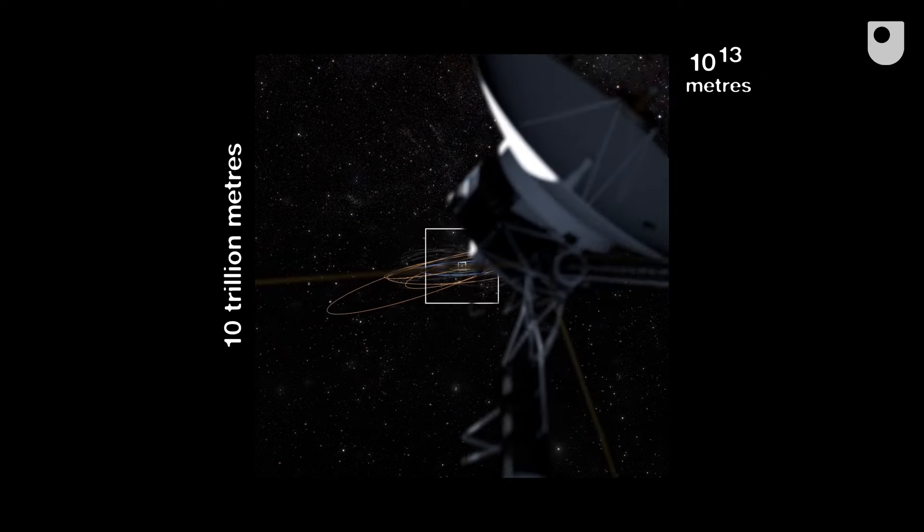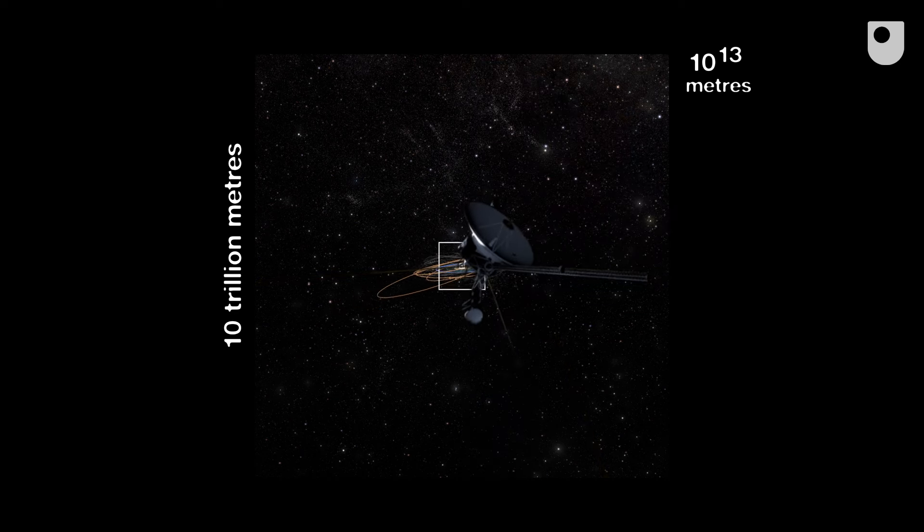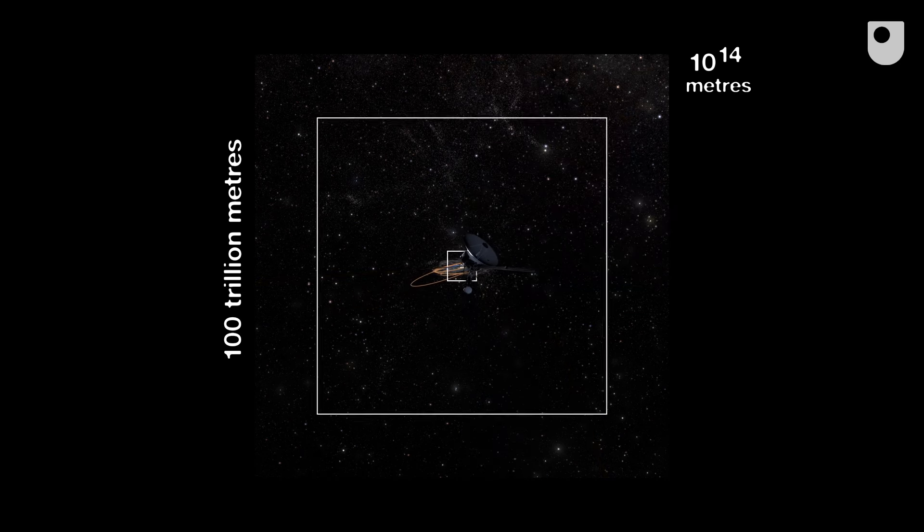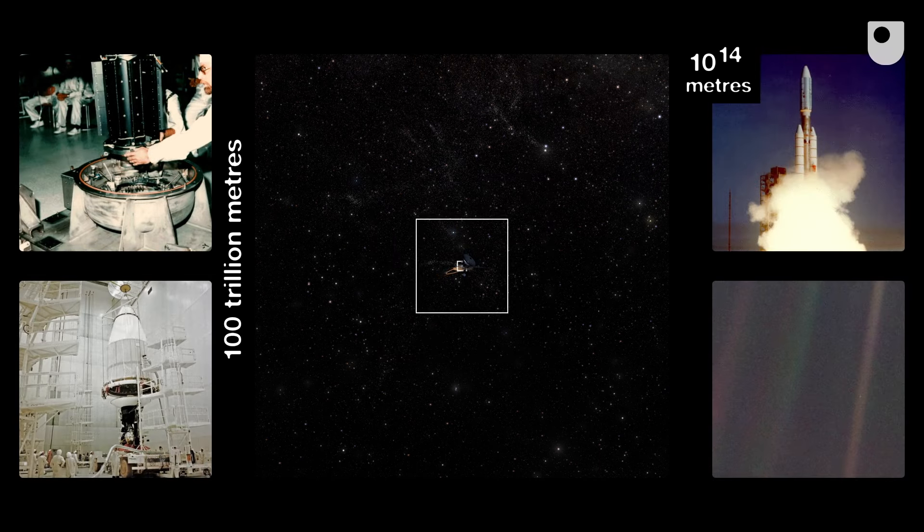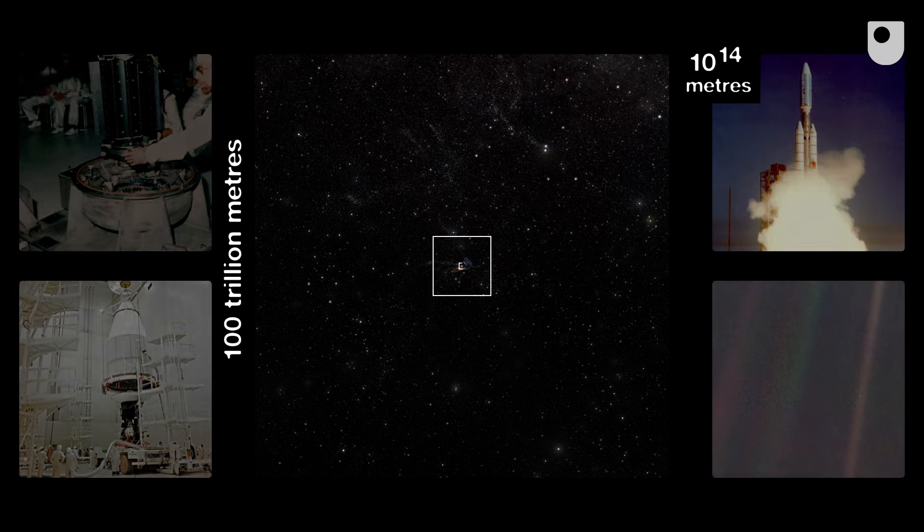In 2012, the Voyager 1 spacecraft became the first human artefact to make this journey, followed in 2018 by its twin, Voyager 2. Both were launched in 1977, the year the Eames were working on powers of ten.